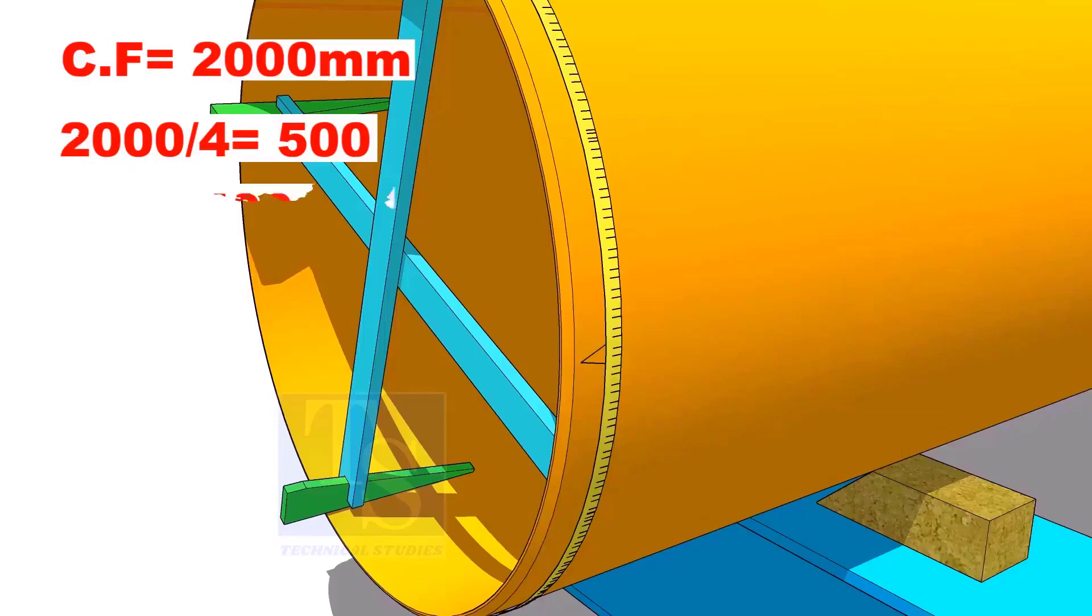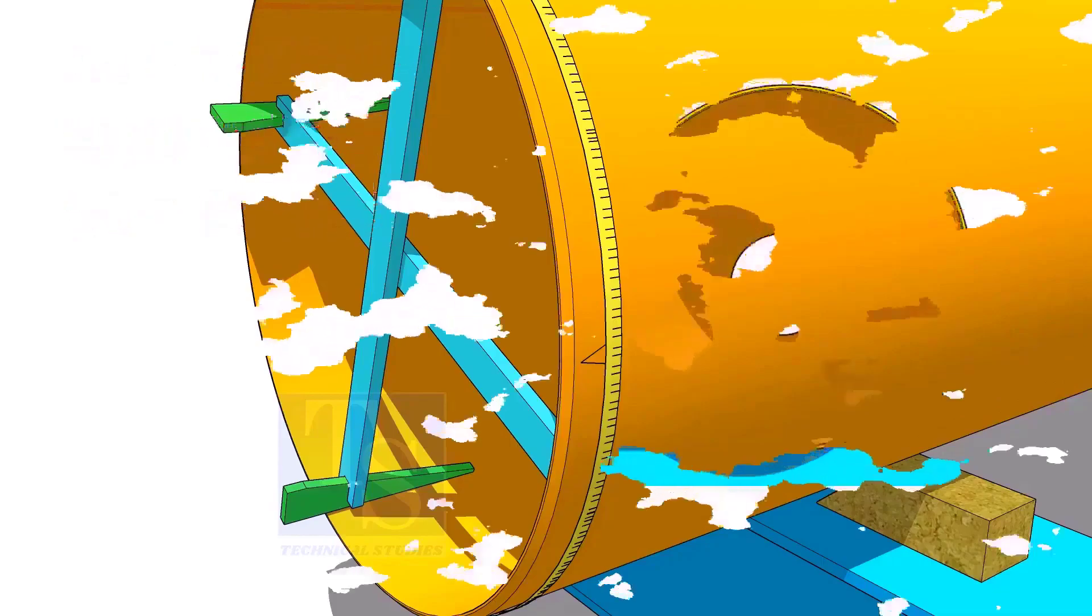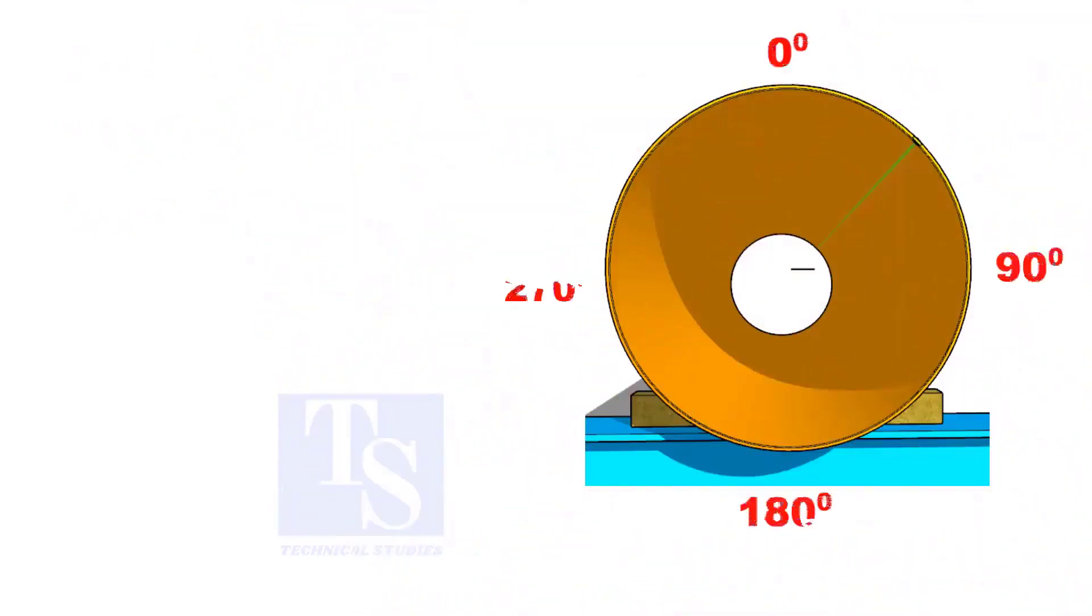Divide it by 4. Now you have the arc length of 90 degrees. Mark the 500 mm each, starting from the center line, as 0, 90, 180, and 270.